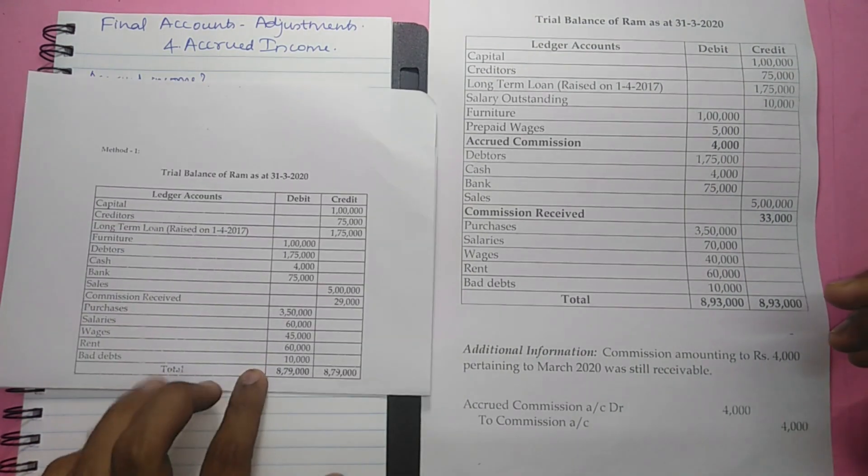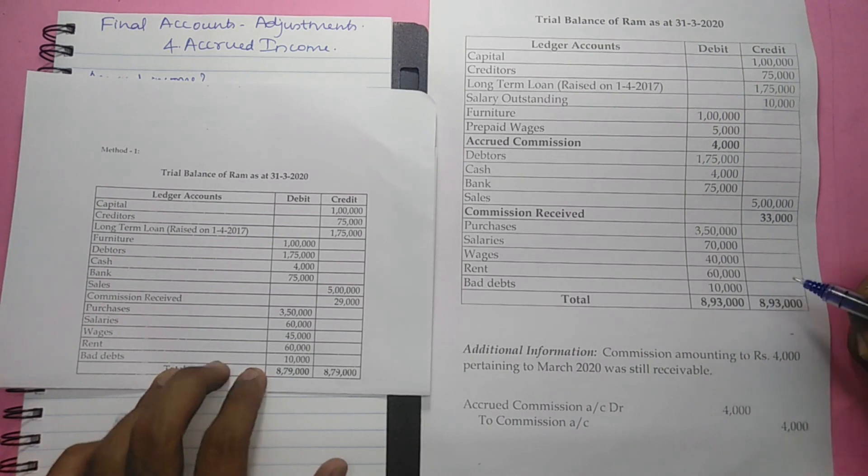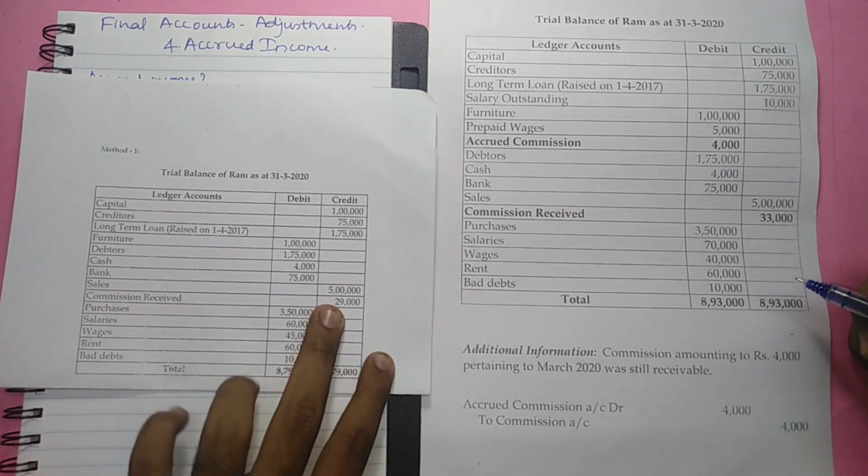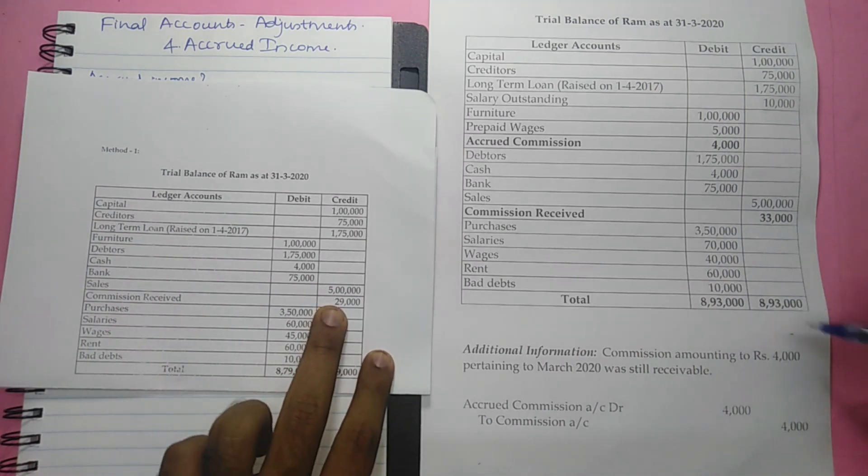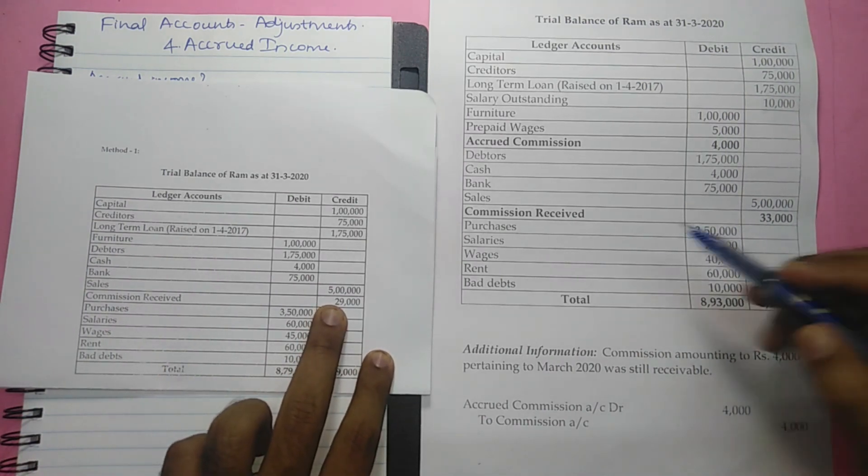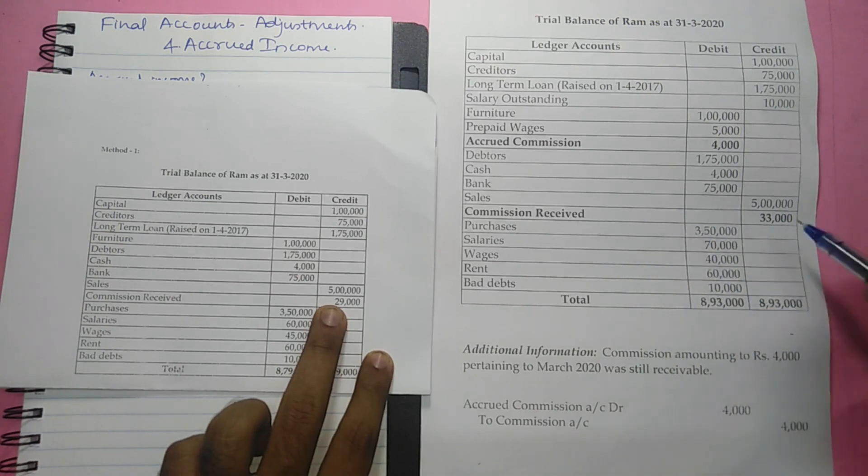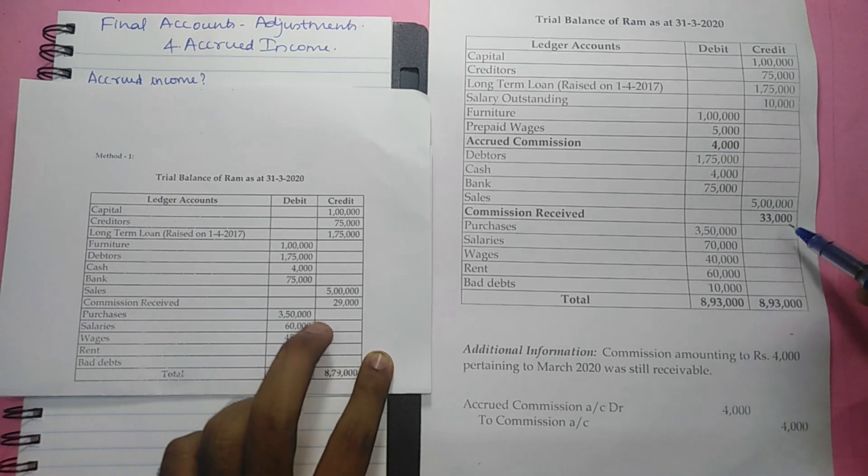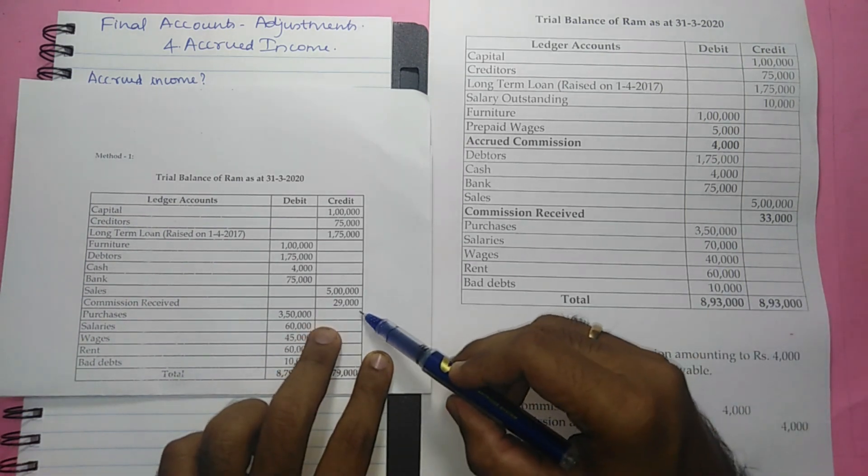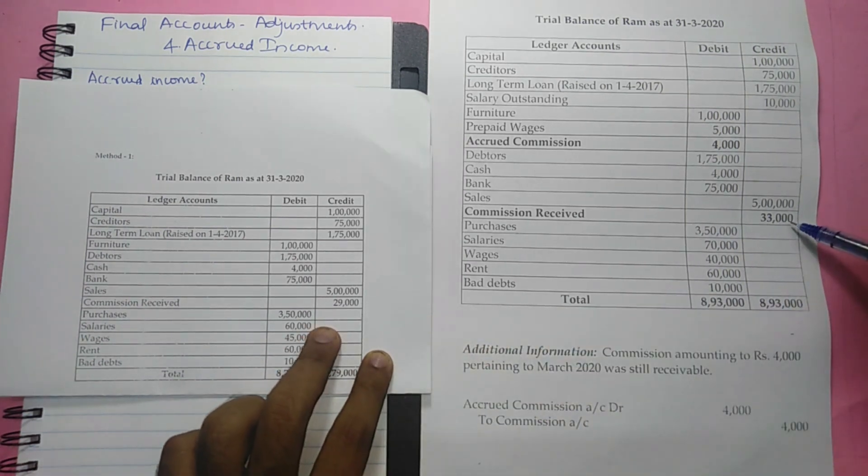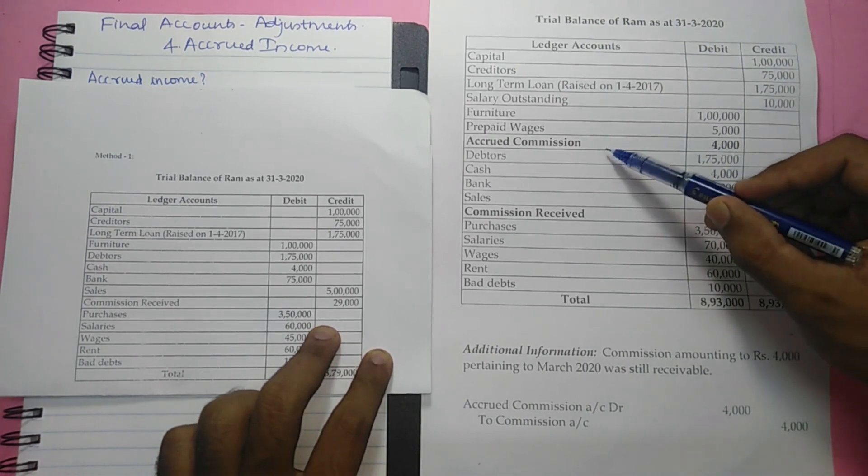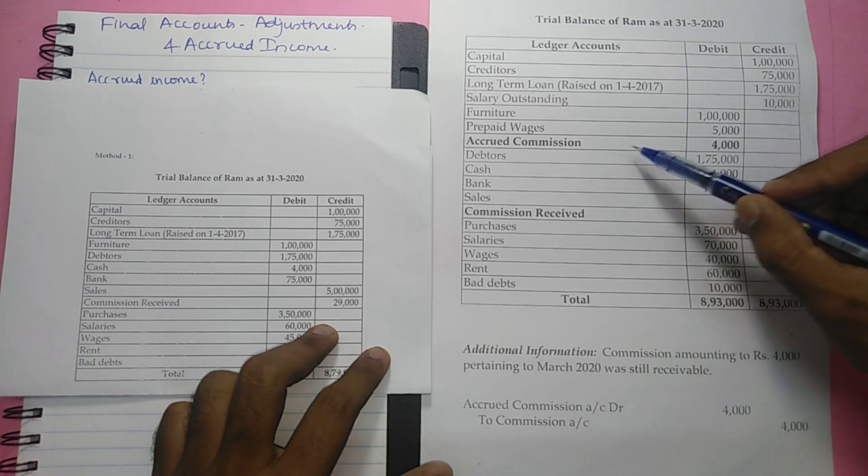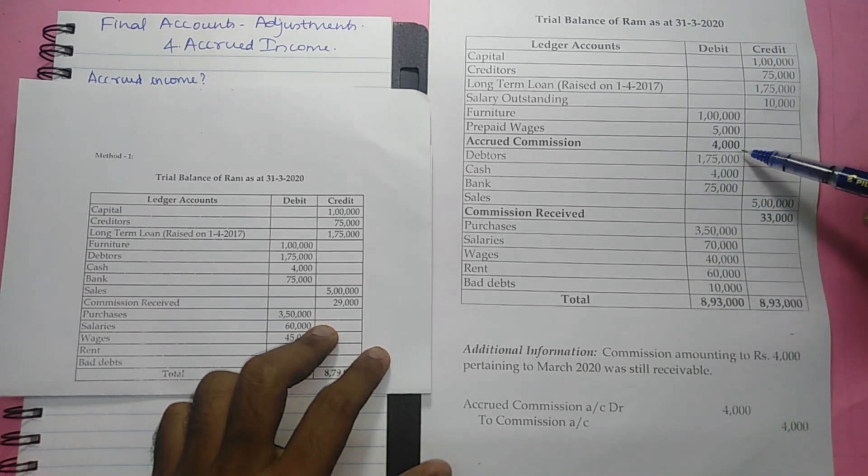This was our original trial balance before the adjustments. Here you can see the commission received amount is Rs. 29,000. Now we have an accrued income of Rs. 4,000. So, the commission received becomes Rs. 33,000. We have added Rs. 4,000 to this Rs. 29,000 as a result this has become Rs. 33,000. And a new asset named accrued commission gets inserted into the trial balance which amounts to Rs. 4,000.